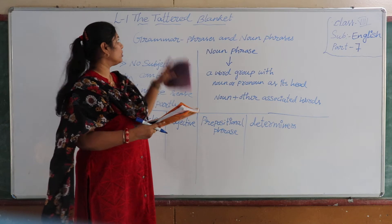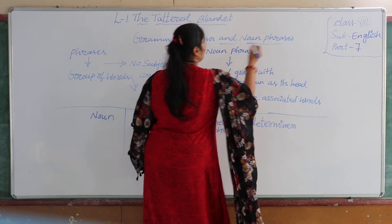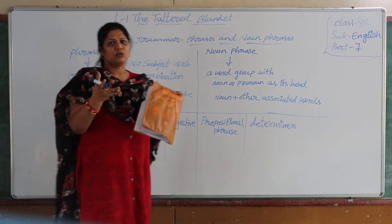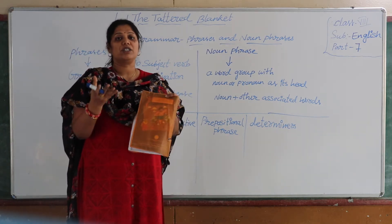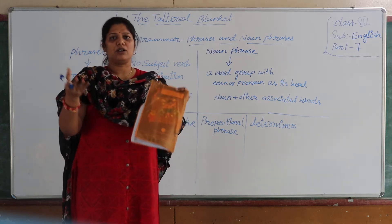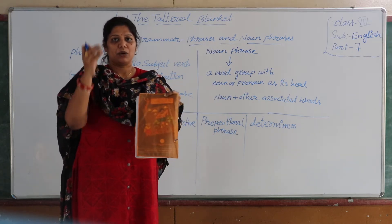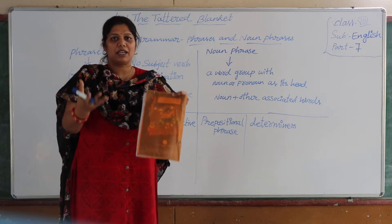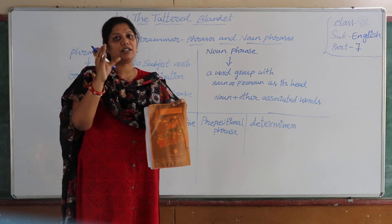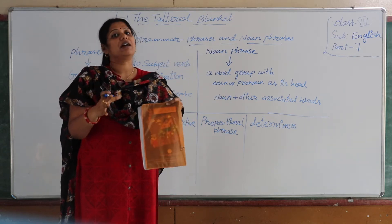Coming to the grammar part, what we are going to discuss here is grammar phrases and noun phrases. To go for noun phrases, first we need to understand what a phrase is. A phrase comes from a group of letters or words. When you put words together — single, double, or triple — they give us meaning. And a group of words put together gives us a complete sentence.